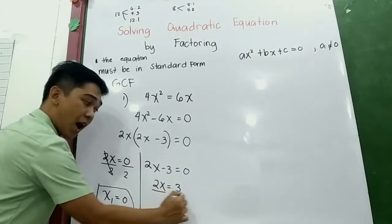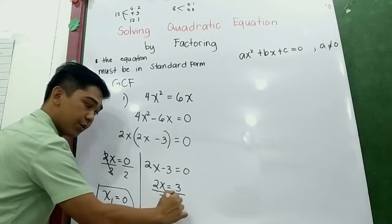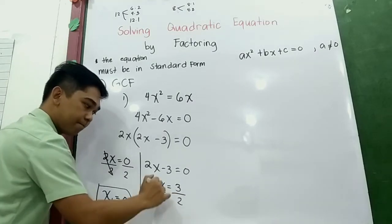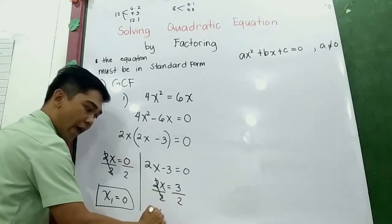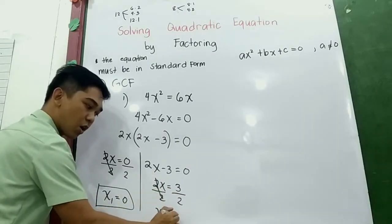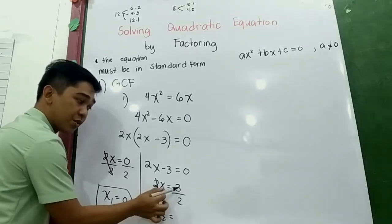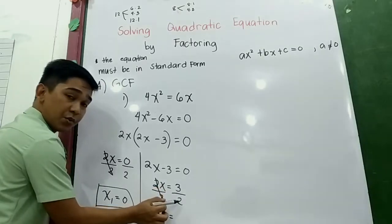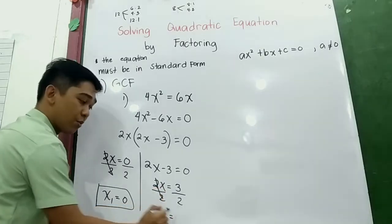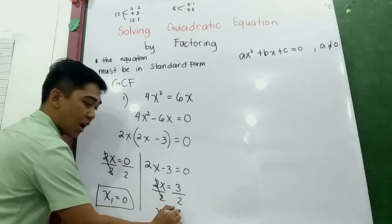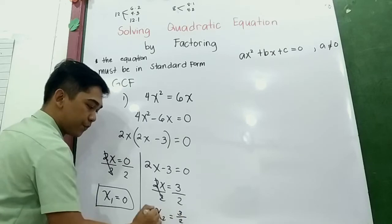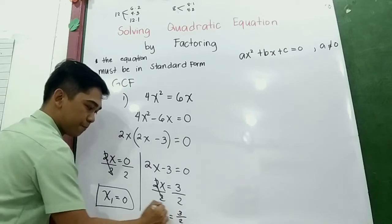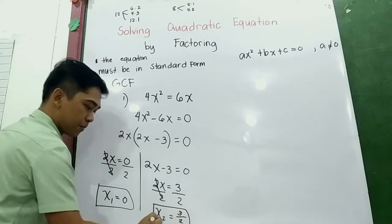For the second factor, 2x − 3 = 0. Divide by 2, so x₂ = 3/2.